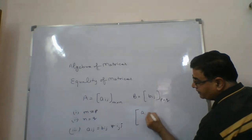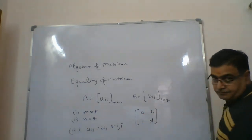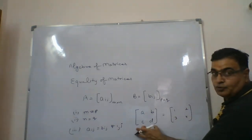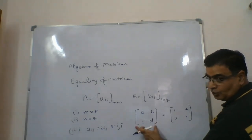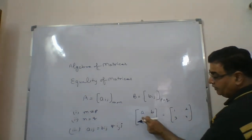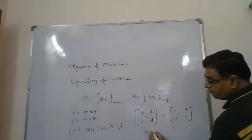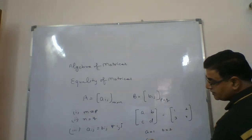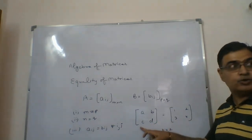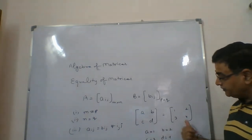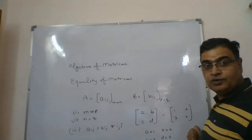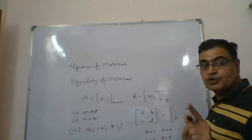For example, if I have a matrix with elements A, B, C, D and this is equal to another matrix 1, 2, 3, 4 — these two matrices are equal because: first, both have 2 rows and 2 columns, so they are of the same order. And their corresponding elements must be equal, so A equals 1, B equals 2, C equals 3, and D equals 4.